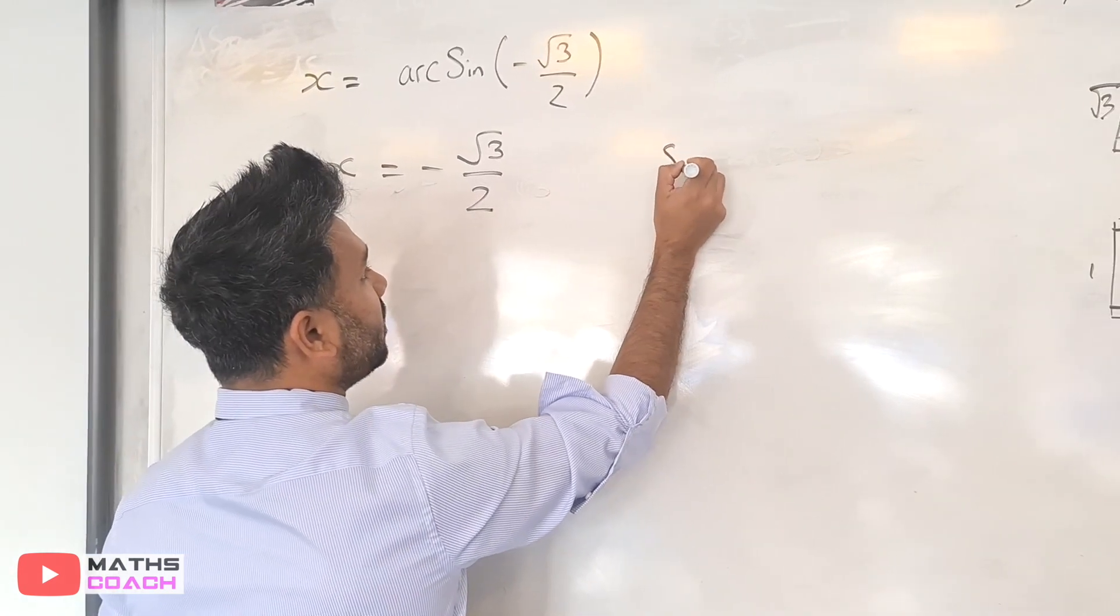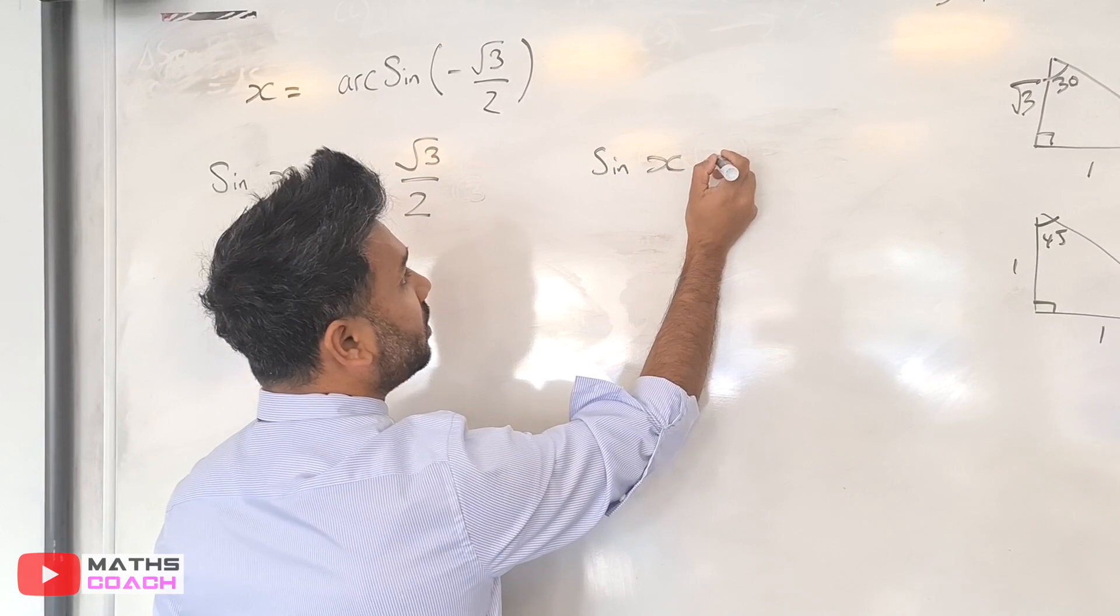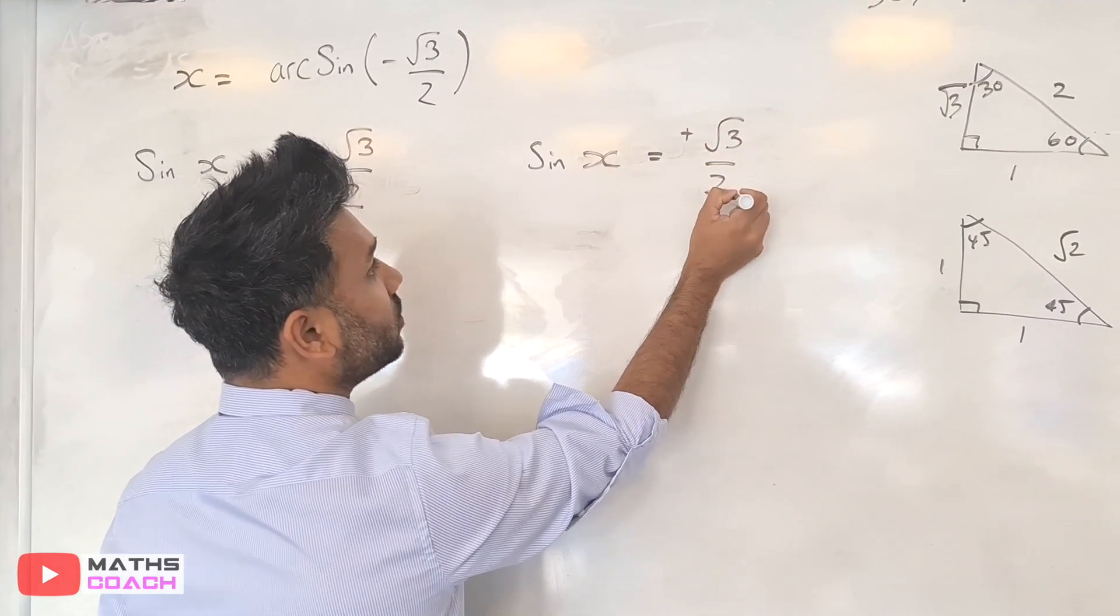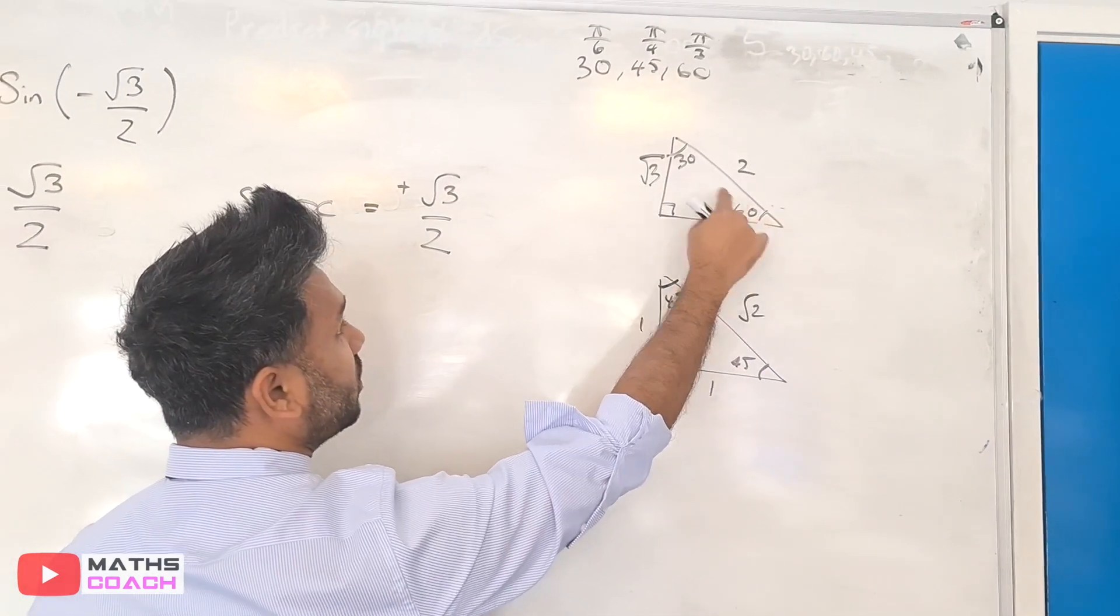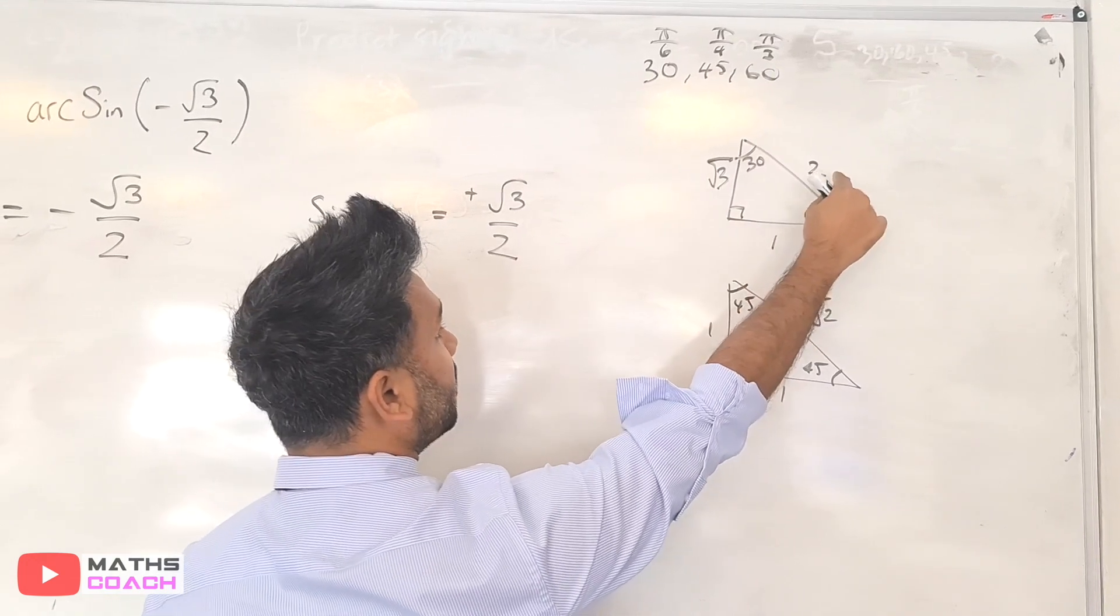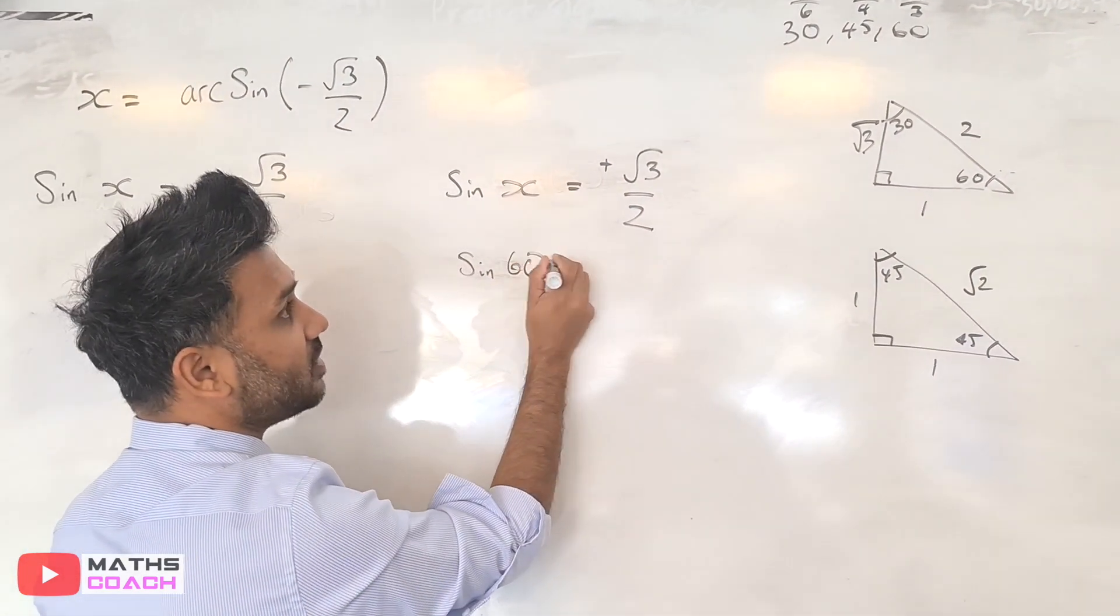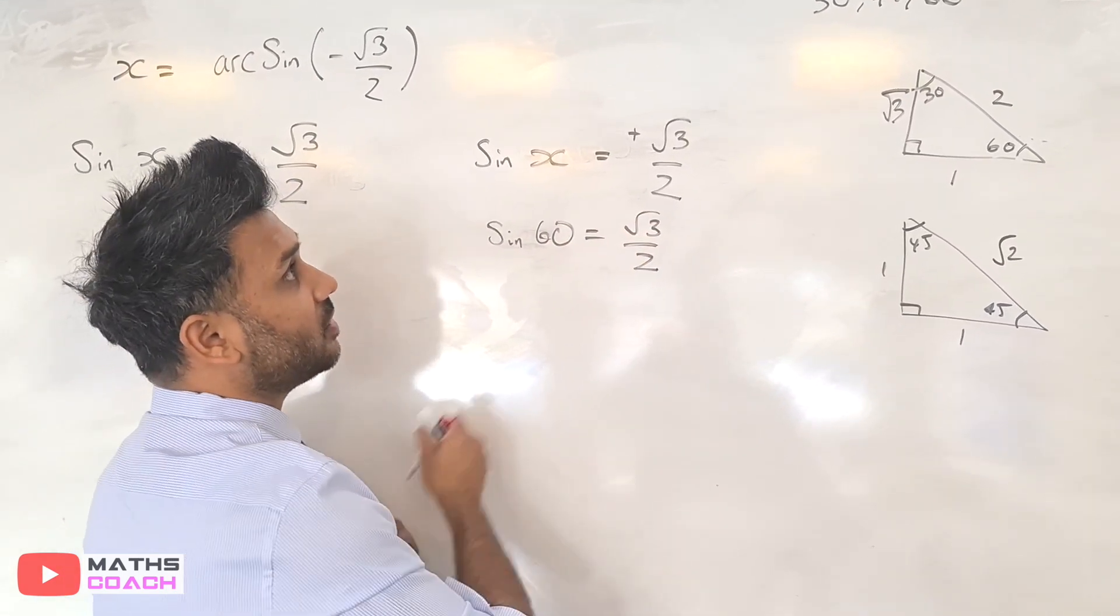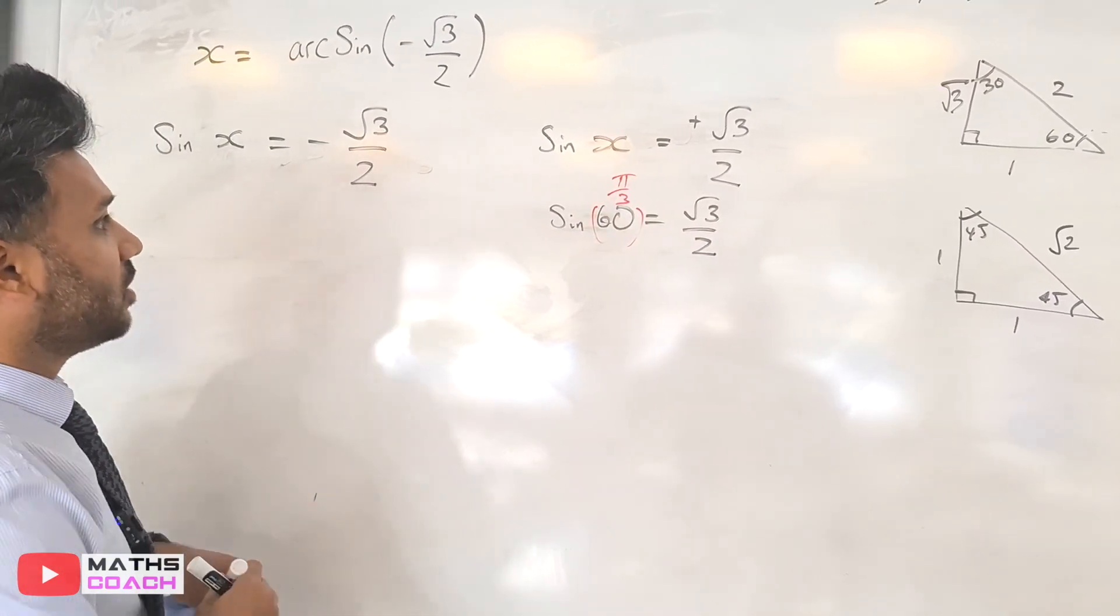And again, as it's a non-calculator question, sine of what angle gives you a positive √3/2? As the root three is a two, sine 60 is opposite divided by the hypotenuse, so from here we see that sin(60°) = √3/2, and 60 degrees is the same as π/3.